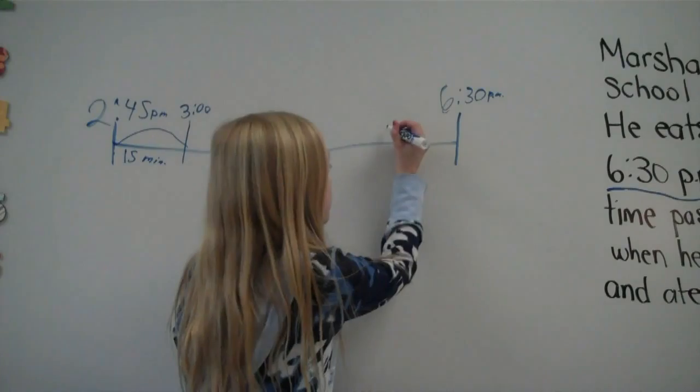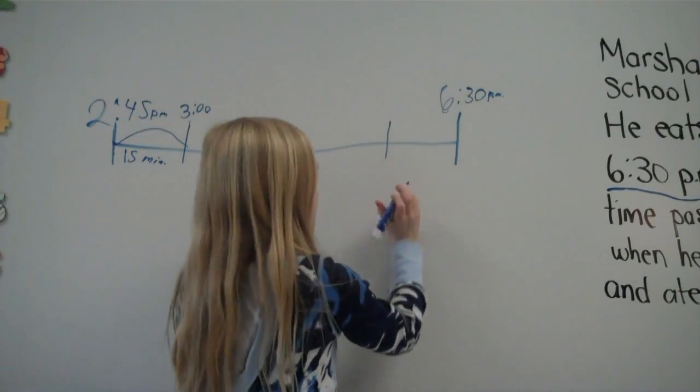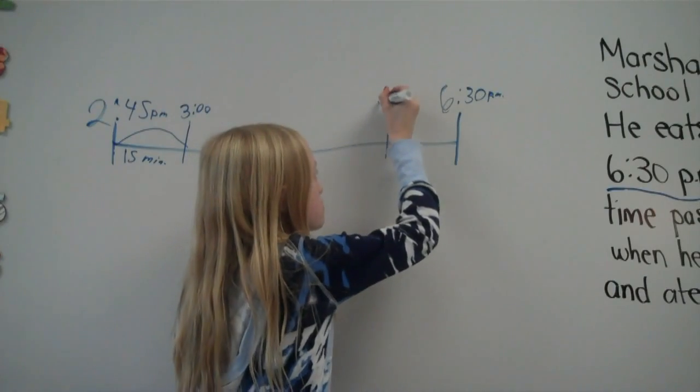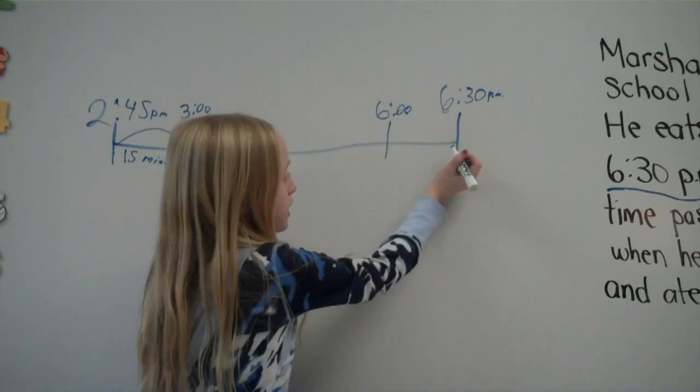Then we have to find out how much time goes between 6:30 p.m. and the previous hour, which is, well, first we have to put the 6 o'clock here, and it's a half an hour.